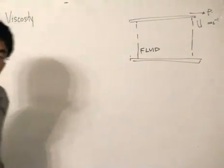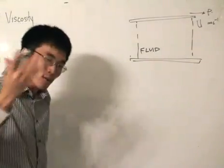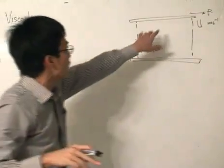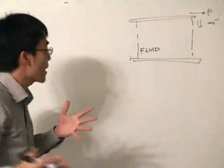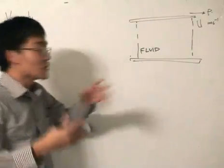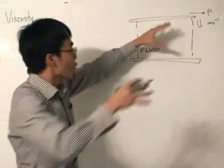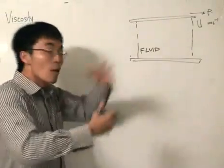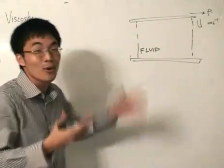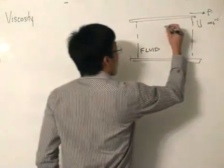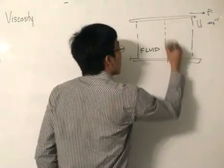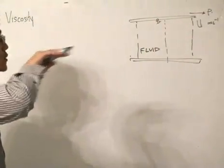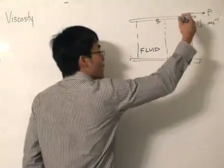but in doing so, the plate at the top moves with a certain velocity U, meters per second. Upon closer inspection, and also common sense would tell us that the fluid at the top would somewhat move with the velocity of that plate, which is velocity U. You don't exactly move the plate and the fluid will just stick by itself. If we want to consider a point B,